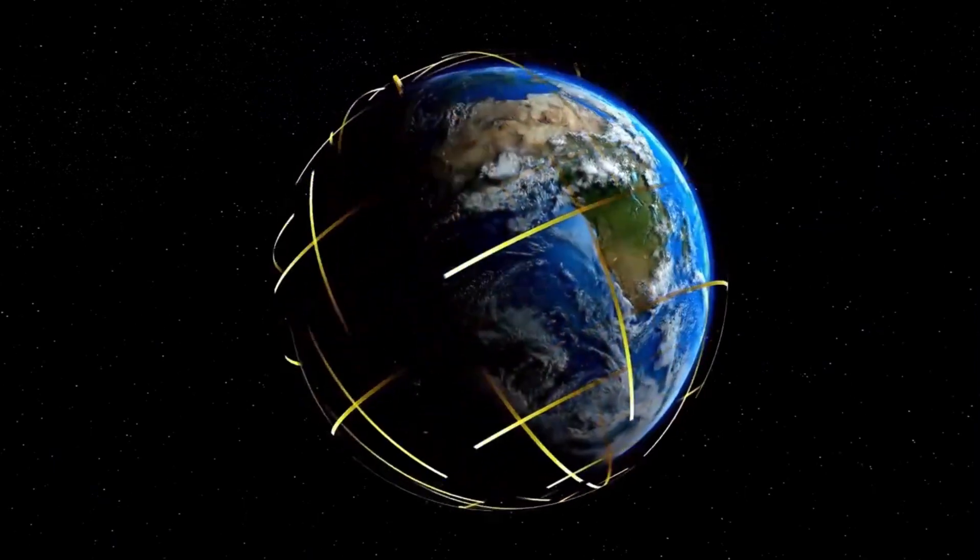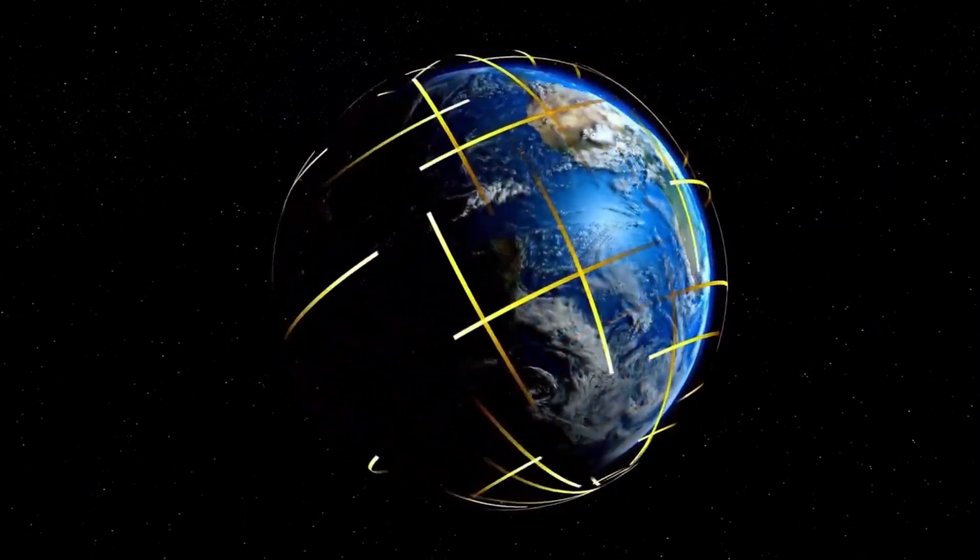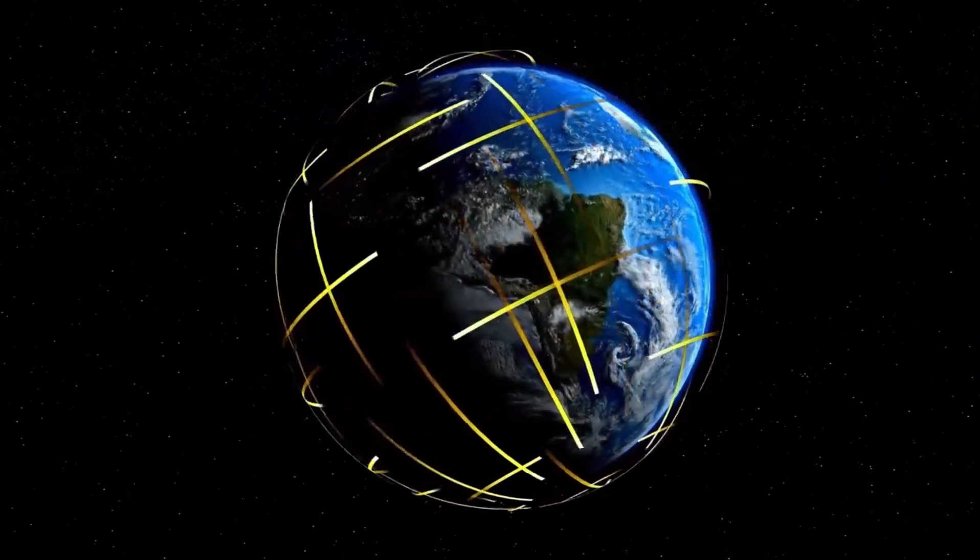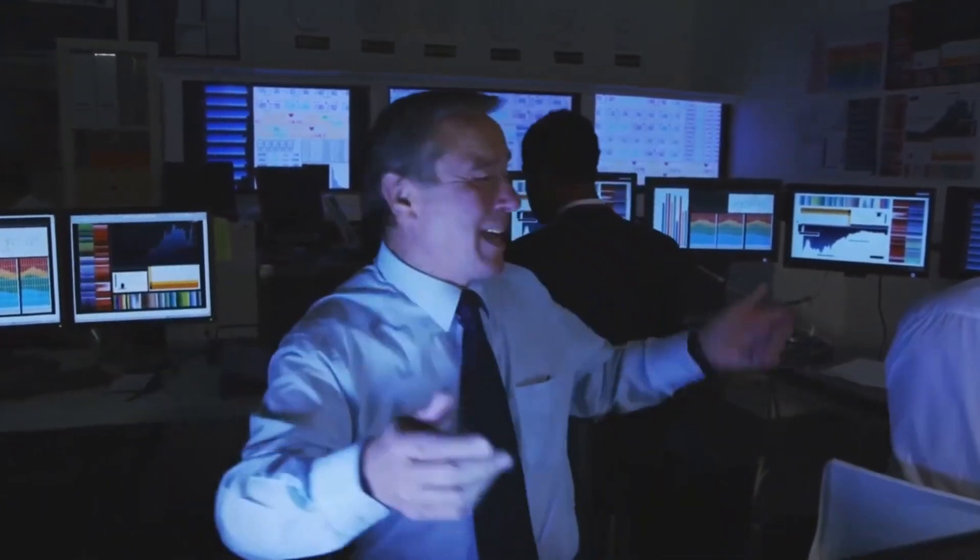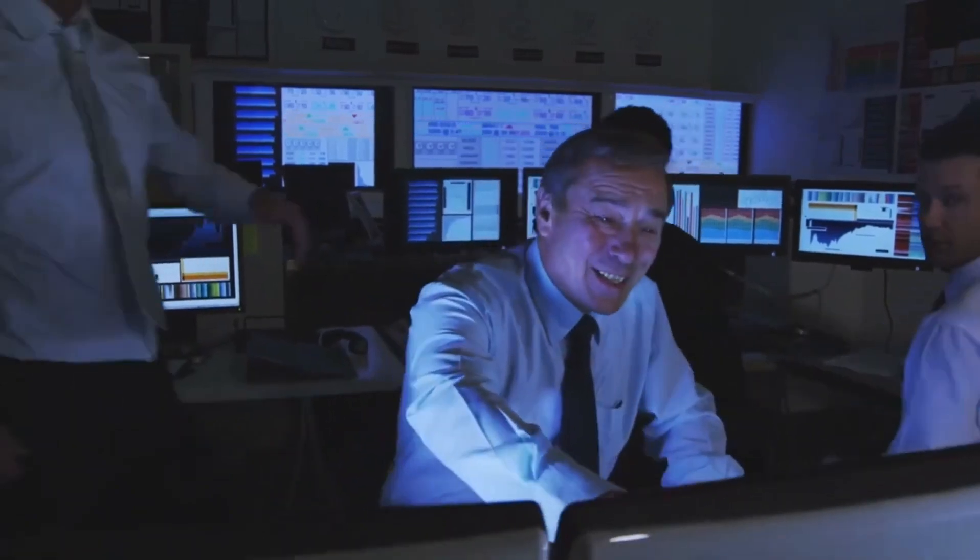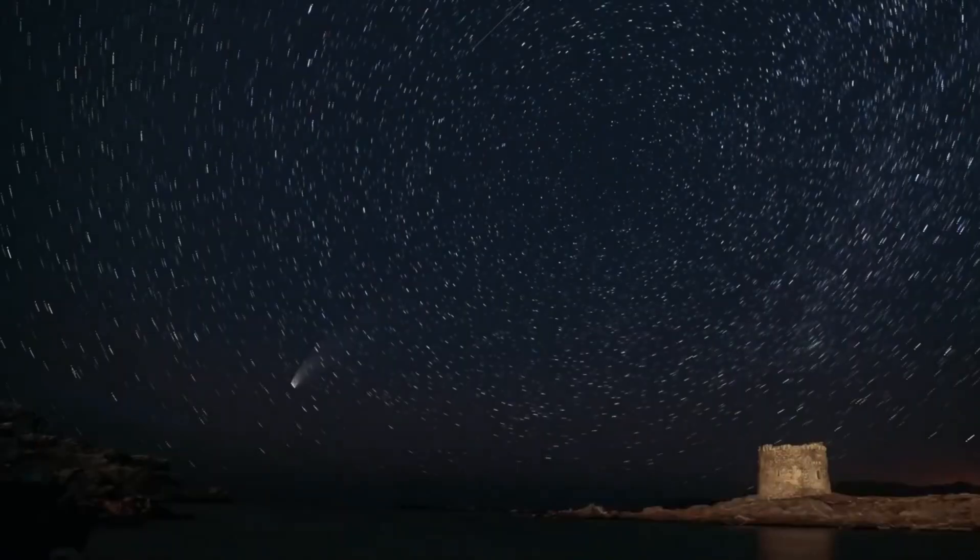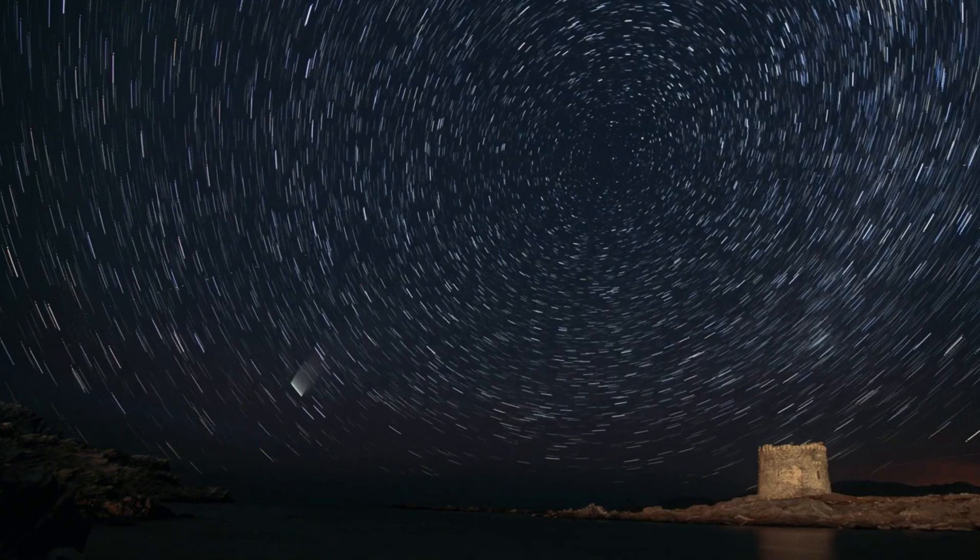Proxima Centauri b is a planet orbiting the closest star to Earth. This introduces Proxima Centauri b, a planet orbiting the closest known star to our planet Earth. What makes this particularly fascinating is the proximity of this star to our solar system. Proxima Centauri is a red dwarf star, much smaller and cooler than our sun.